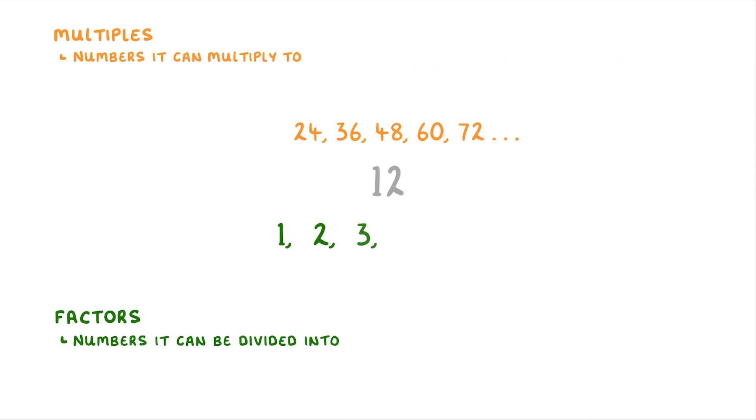So to quickly sum everything up, if we took a number like 12, its multiples would be the bigger numbers that it can multiply to, like 24, 36, 48, and so on. Whereas its factors are the numbers it can be divided into, like 1, 2, 3, 4, 6, and 12.